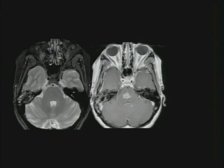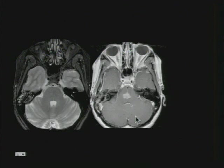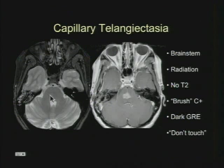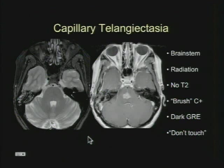Here's an axial T2 and axial post-contrast — no T2 abnormality, but on the post-contrast you see this faint brush-like enhancement in the pons. This is classic for a capillary telangiectasia. These are commonly in the brainstem and associated with radiation. Usually there's no T2 signal, but in larger lesions you can have T2 abnormality. When you do a gradient sequence, you'll see susceptibility in the brainstem. These are don't-touch lesions.